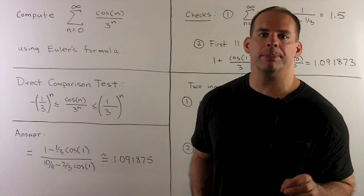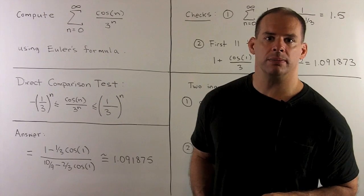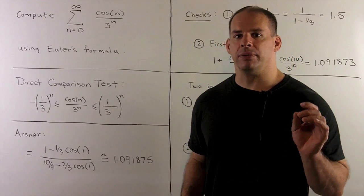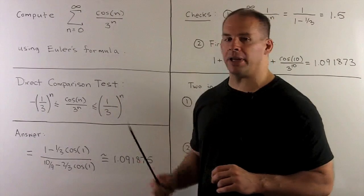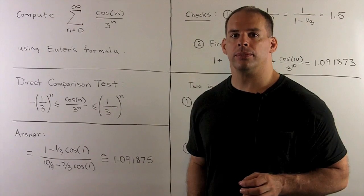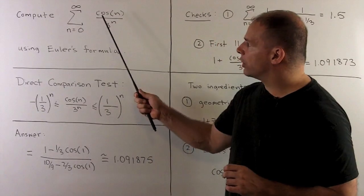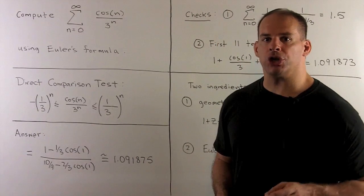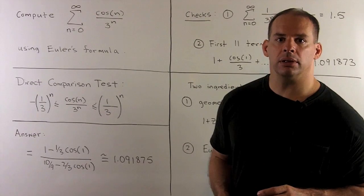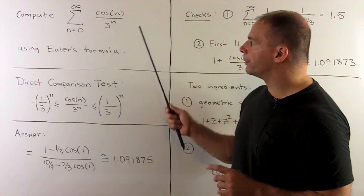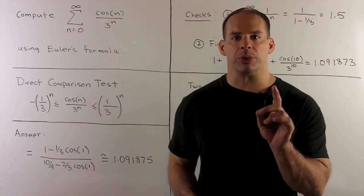Here's an application of Euler's formula to find the sum of a series. Our series of interest, I have the sum as n goes from 0 to infinity, cosine of n over 3 to the n. If we replace cosine of n with a 1, we have a geometric series that converges and we know how to find its sum. When we have cosine of n in the numerator, it's not so clear how to proceed.